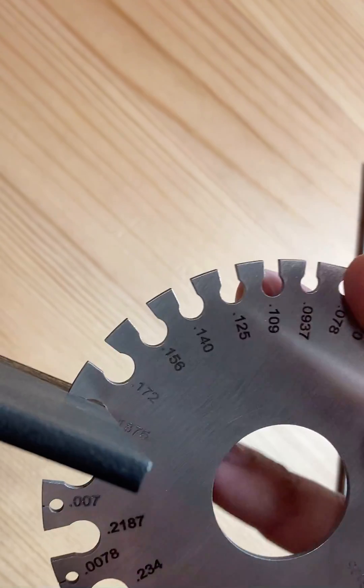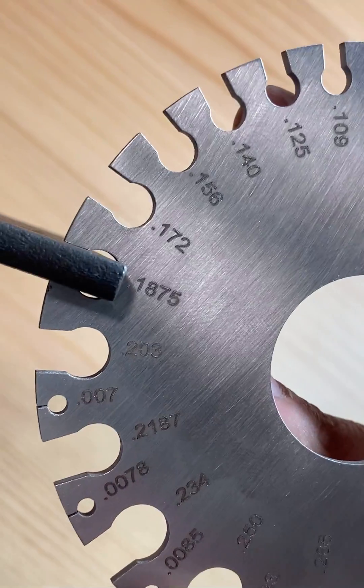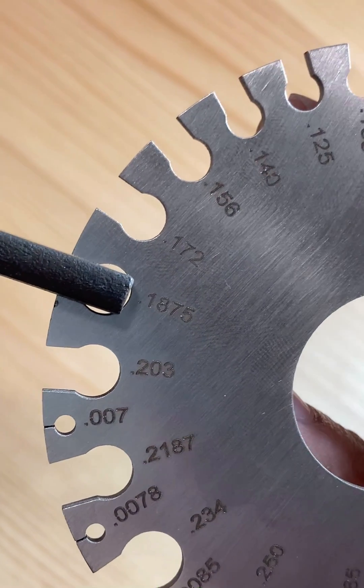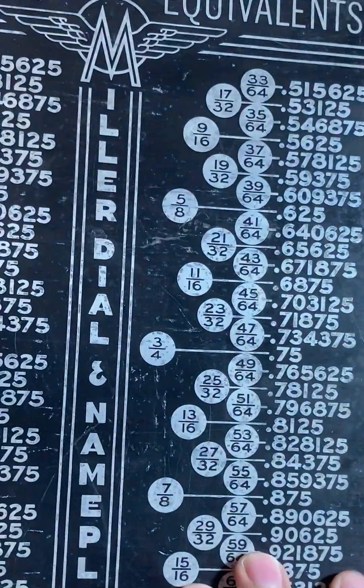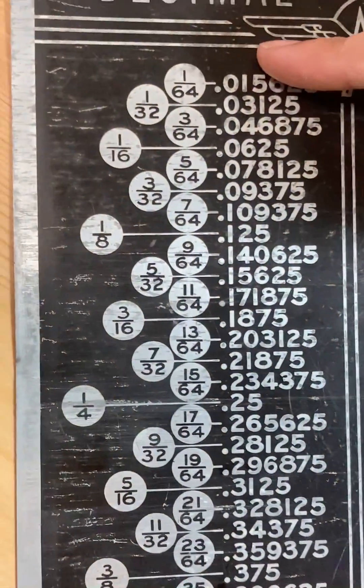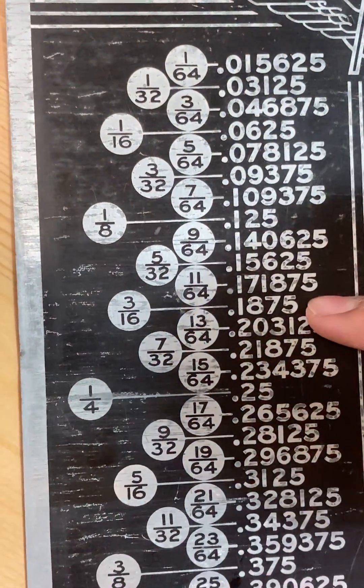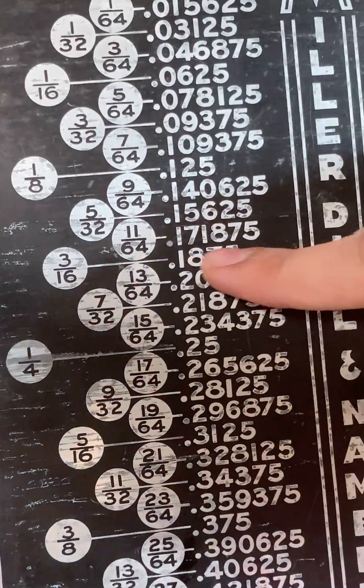You flip it to get the size in inches. Right here it's .1875. You get this number, .1875, and you go to your conversion chart and look for that number. Here it is, .1875, which is equivalent to three sixteenths of an inch.